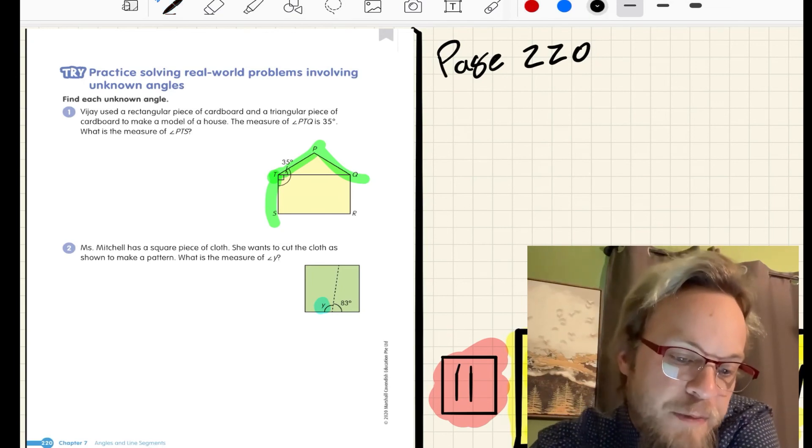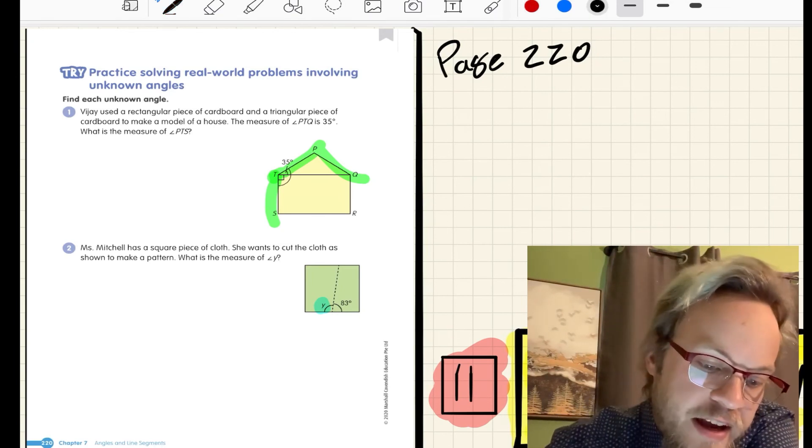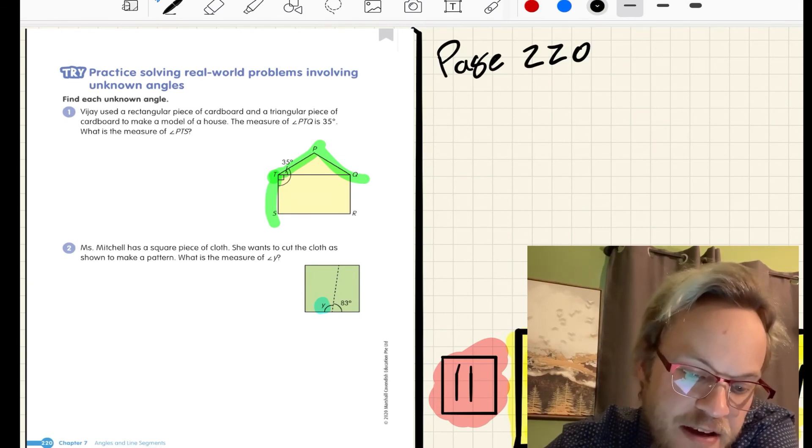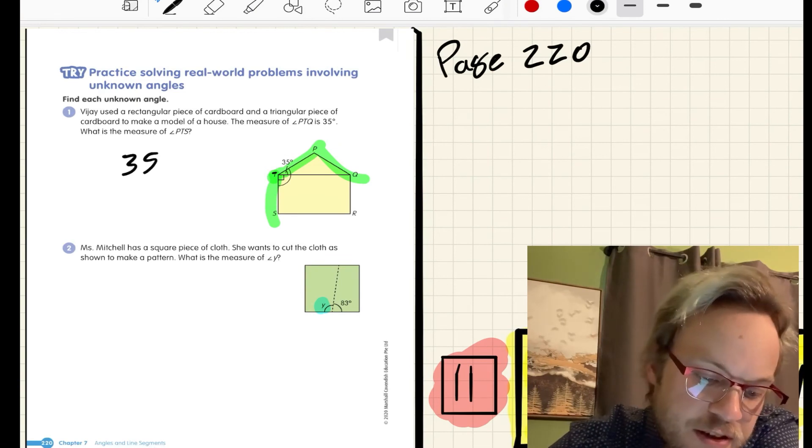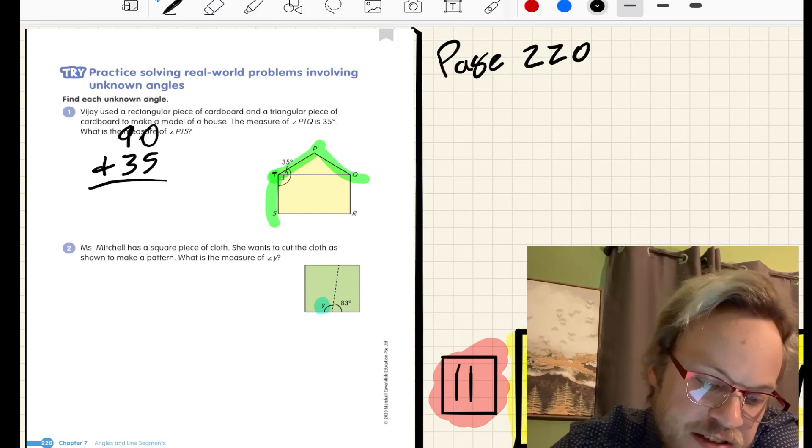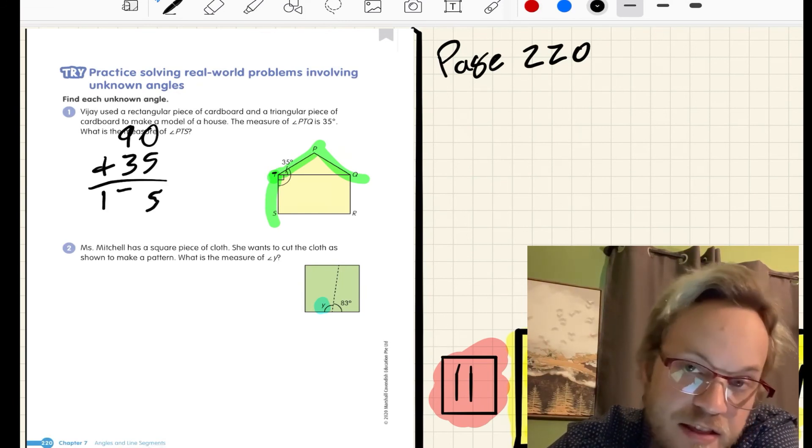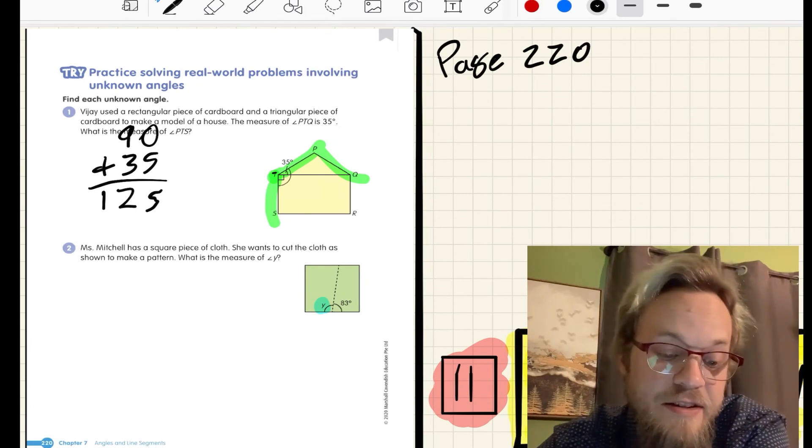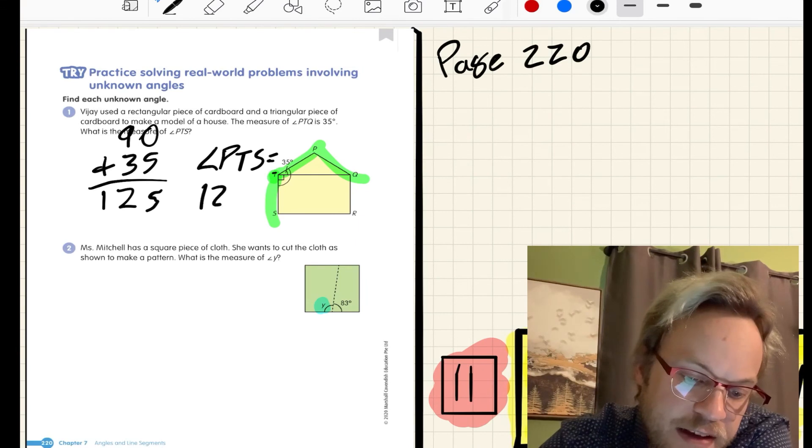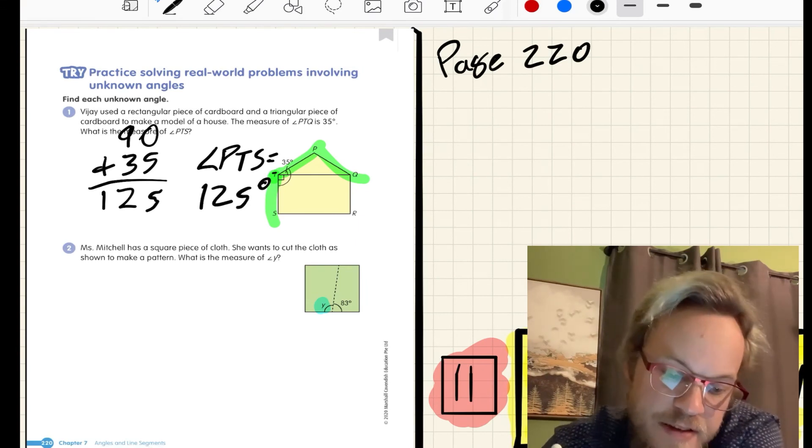If we work through problem number one, Vijay and his model house, finding the angle of P-T-S. Well, P-T-S is a combination of P-T-Q, which is 35 degrees, and S-T-Q, which is 90 degrees. If we just add those all up, five plus zero is five, 30 plus 90 is 120. Angle P-T-S equals 125 degrees.